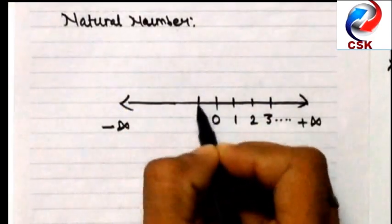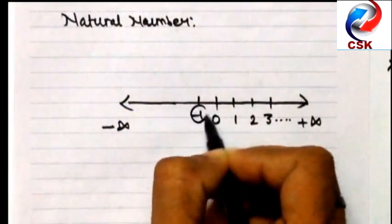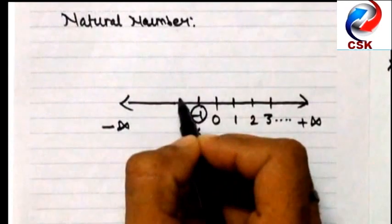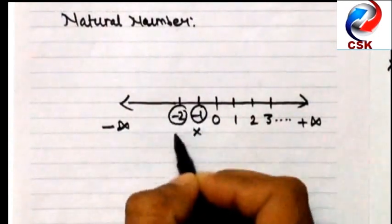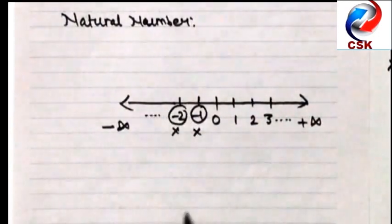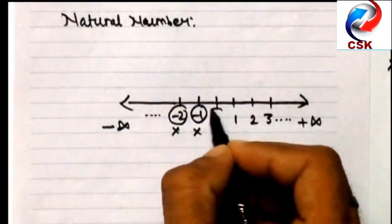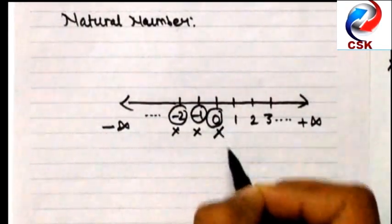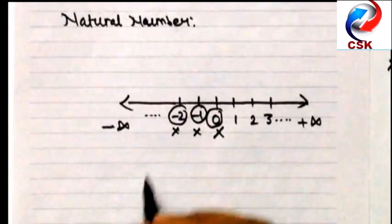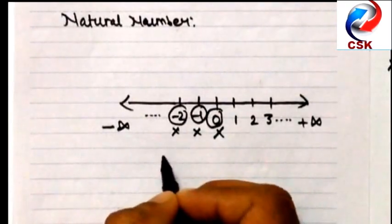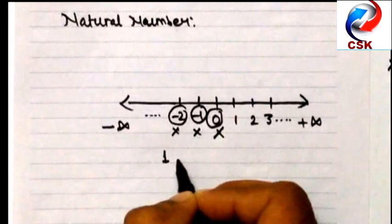But minus 1, minus 2, minus 3, all these points would not be a natural number. Any value which comes between two positive values cannot be a natural number. Remember 0 is not a natural number and obviously minus infinite and plus infinite are not natural numbers. They are imaginary numbers.